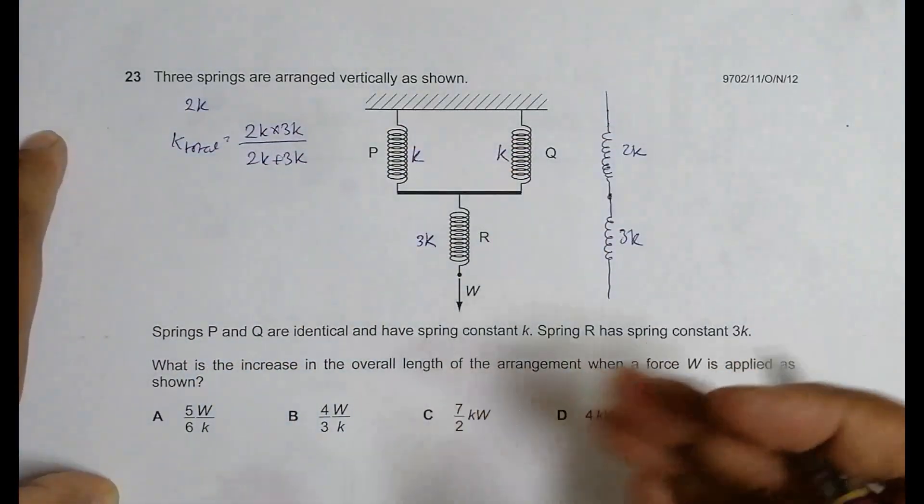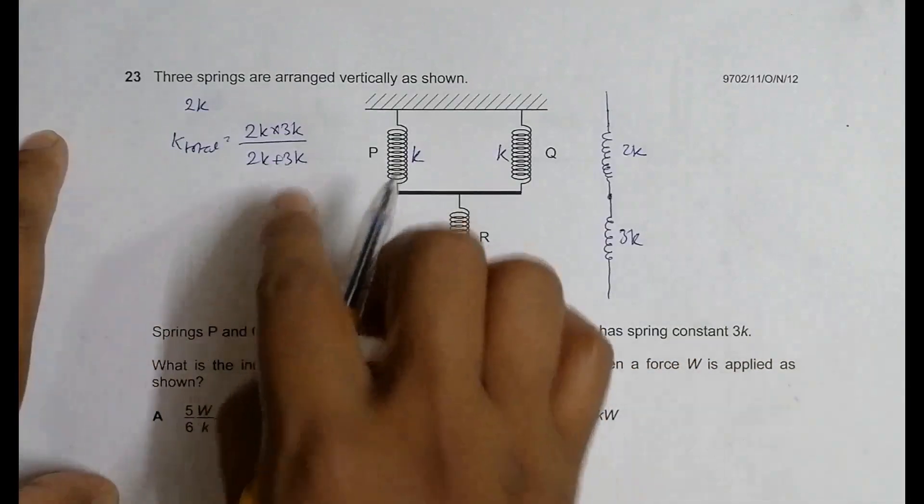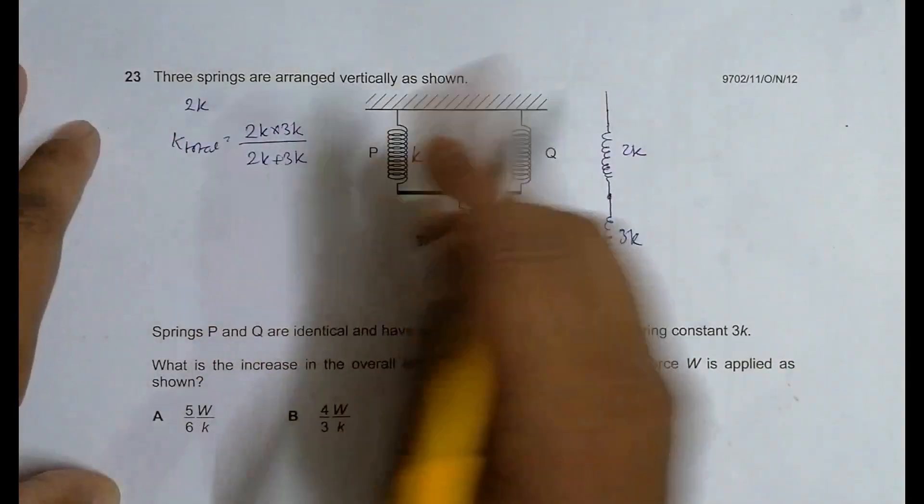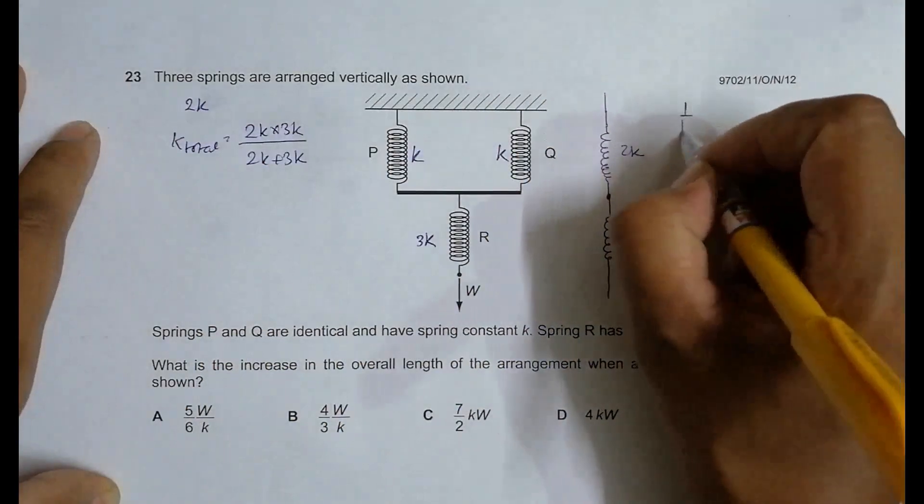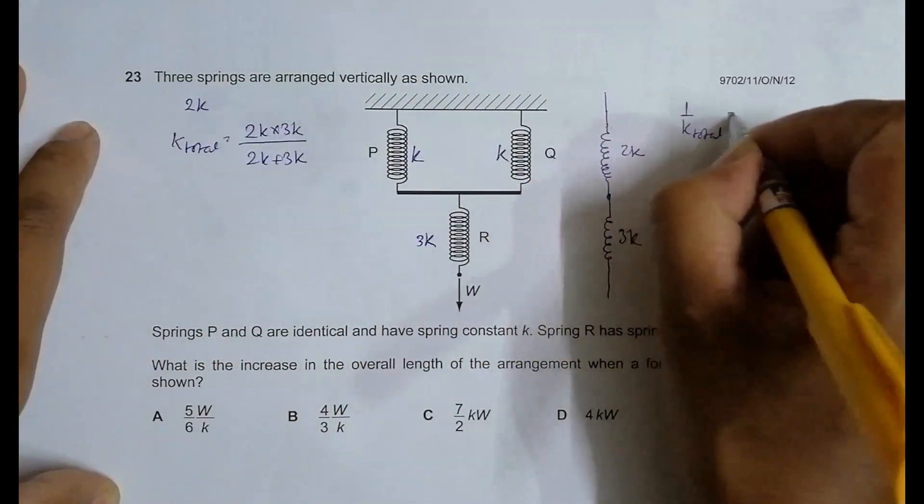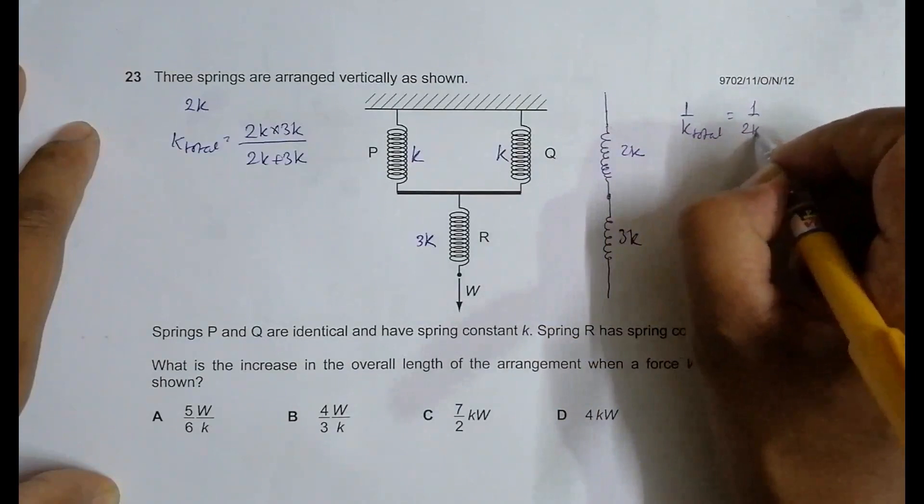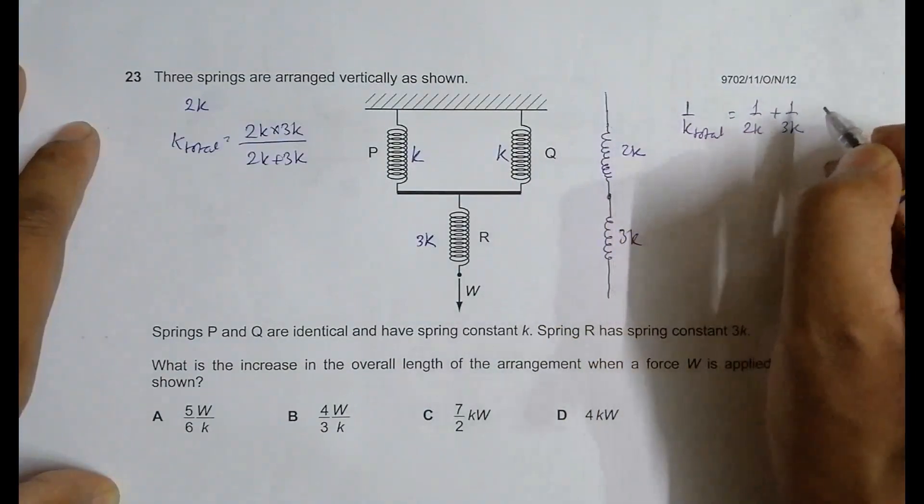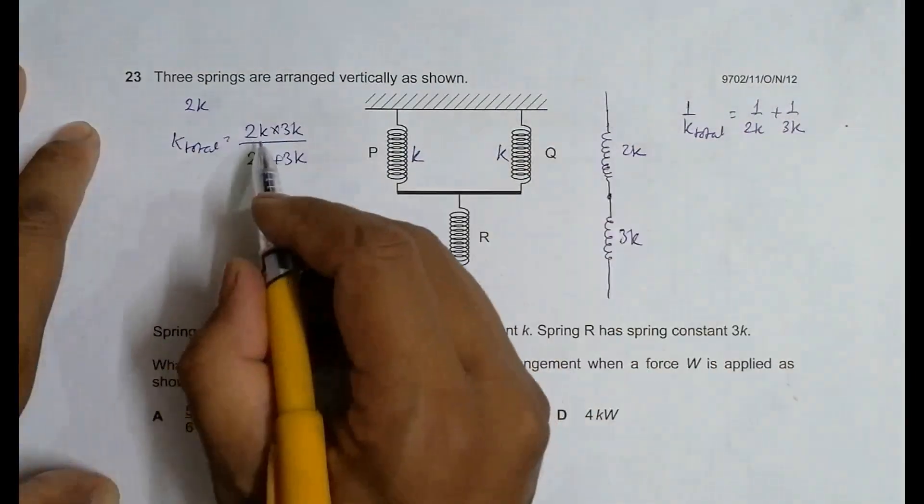So it comes with this relation: 1 by K total is equal to 1 by 2K plus 1 by 3K. So with that we can definitely arrive at this.